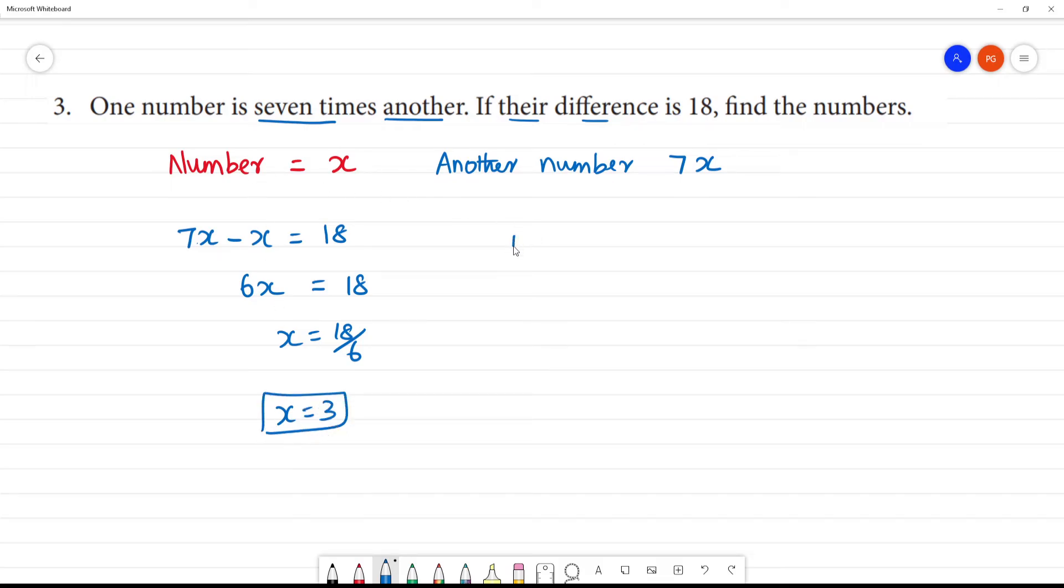Okay. What is the number? The number is x, the x is equal to 3. And another number is 7x. 7x is equal to 21.